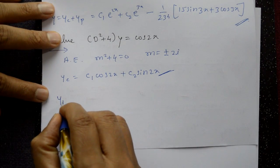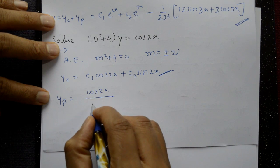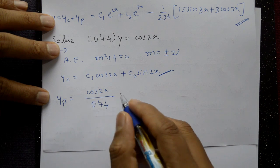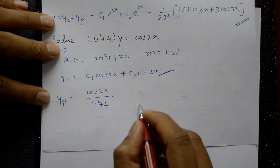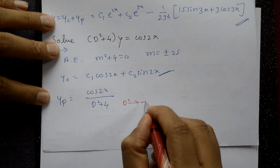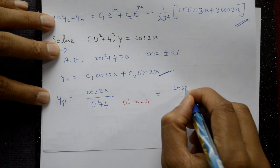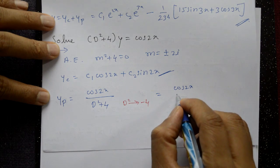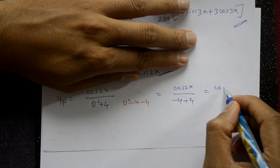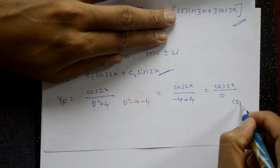For the particular integral: yp = cos2x / (D² + 4). Applying D² = −a² where a = 2, D² = −4, this gives cos2x / (−4 + 4) = cos2x / 0. The denominator equals zero, so this is a failure case.